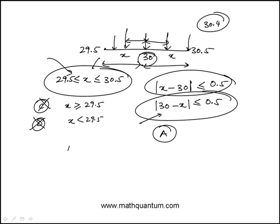If you look at B, you would plug in |30 - 30.4|. Is that greater than 0.5? This is |-0.4|, which is 0.4, and 0.4 is not greater than 0.5. So that's how you would eliminate B.